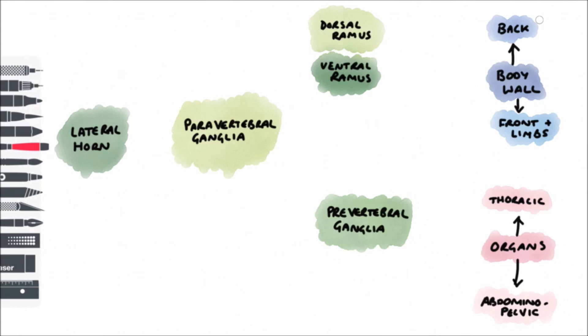So in order to supply the back, and what I mean by that is the area immediately down the sides of the vertebral column, it's not a very big area. Our preganglionic fiber leaves the lateral horn, enters the paravertebral ganglia, where it synapses, and now the postganglionic fiber will return to the spinal nerve and to the dorsal ramus, and then to the effector.